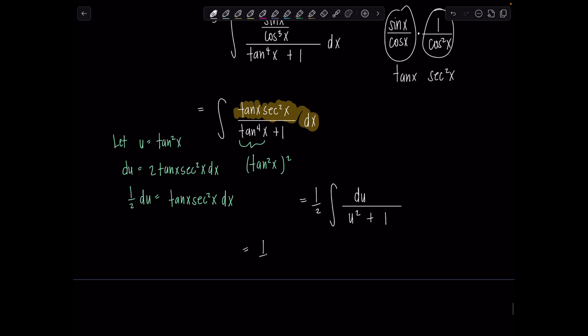So then this is just going to be one half tan inverse of u plus c, which is one half tan inverse tan squared x plus c. Now you might be saying, Professor V, these answers don't match. We had two sine squared x minus one with the first result.